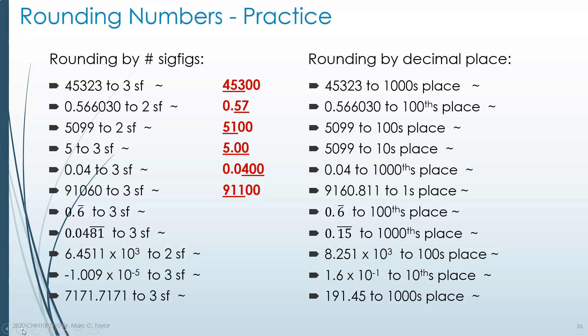0.6 with a line over it — that line means the digit repeats, so it's 0.66666... forever, a repeating 6. To satisfy three significant digits, we round the third significant digit, and therefore the answer is 0.667, as opposed to 0.666 repeating forever.